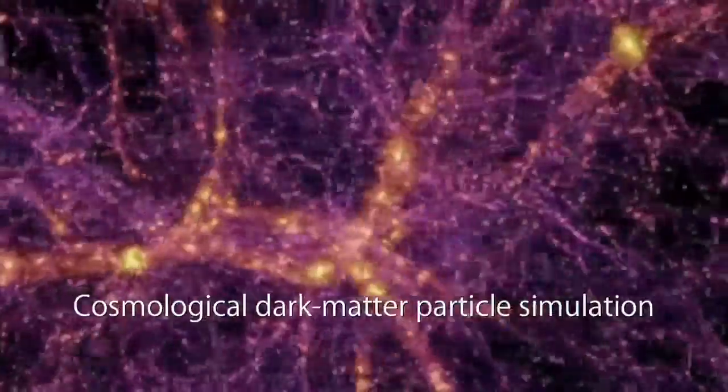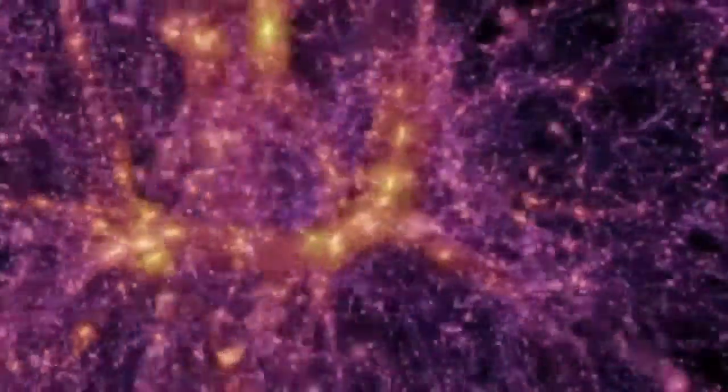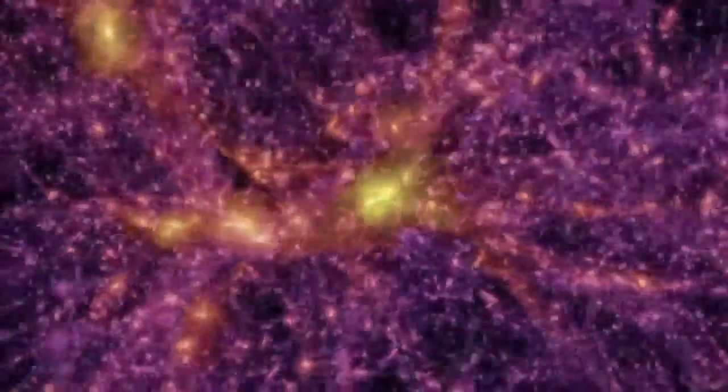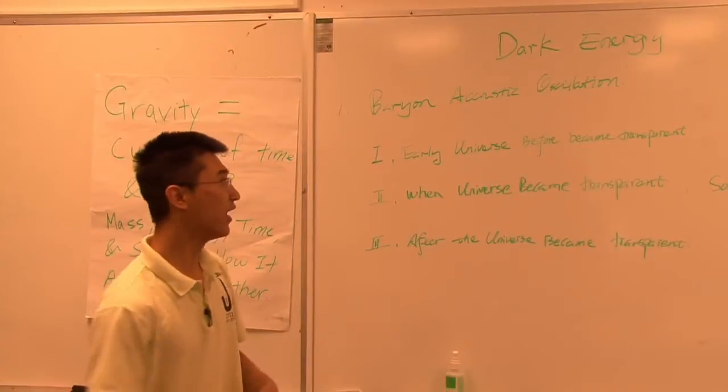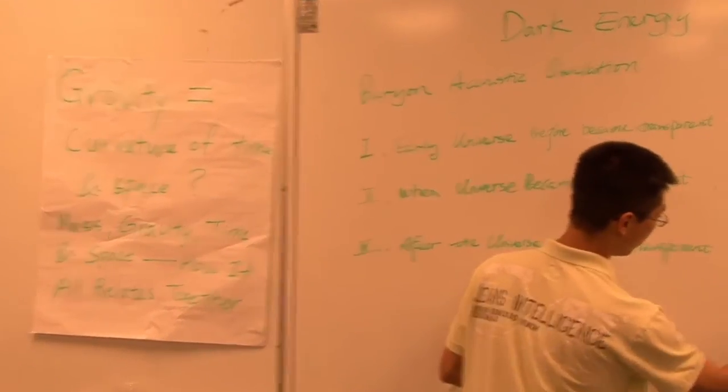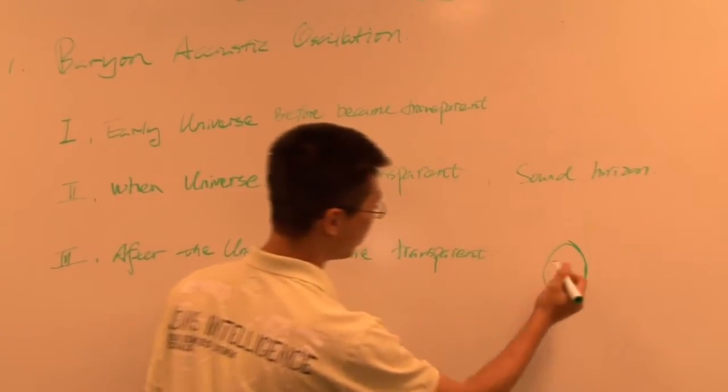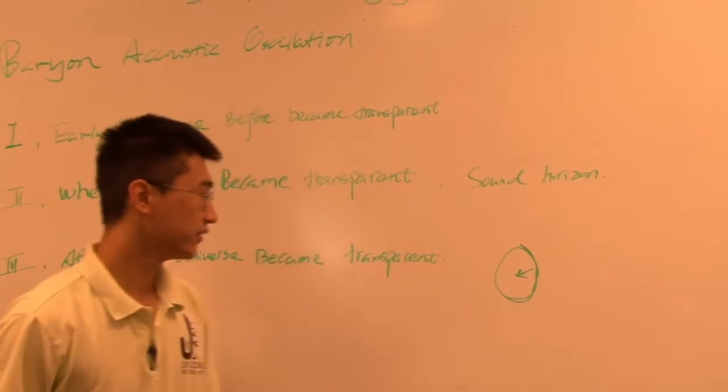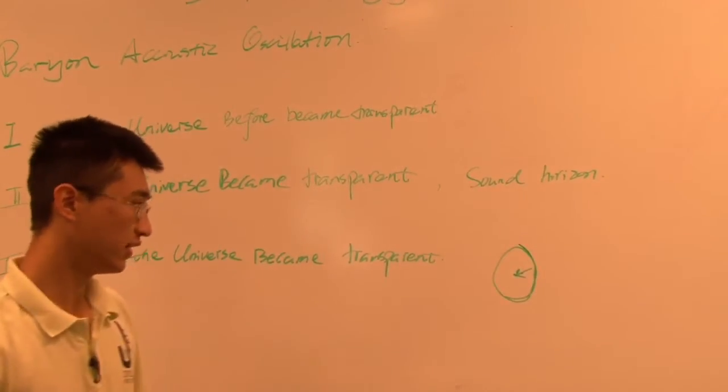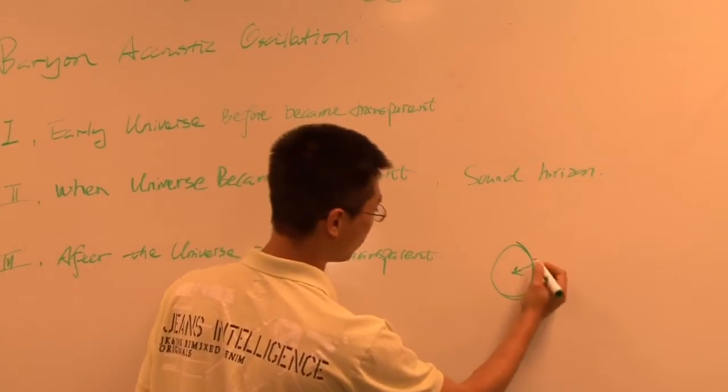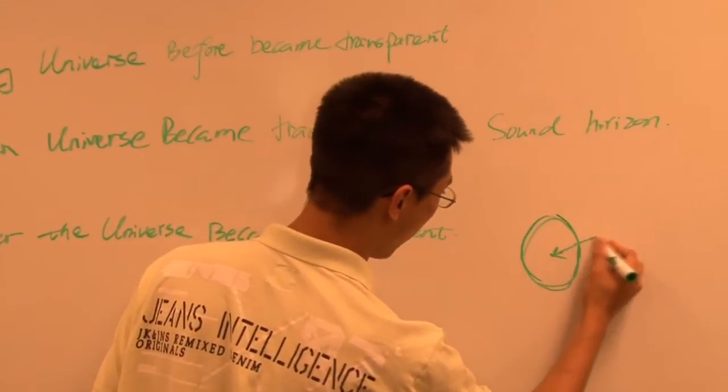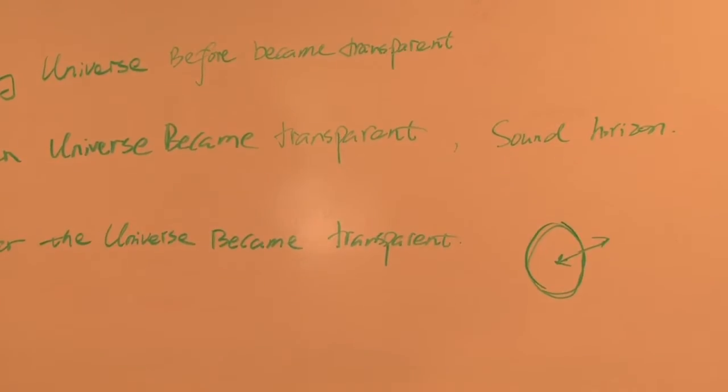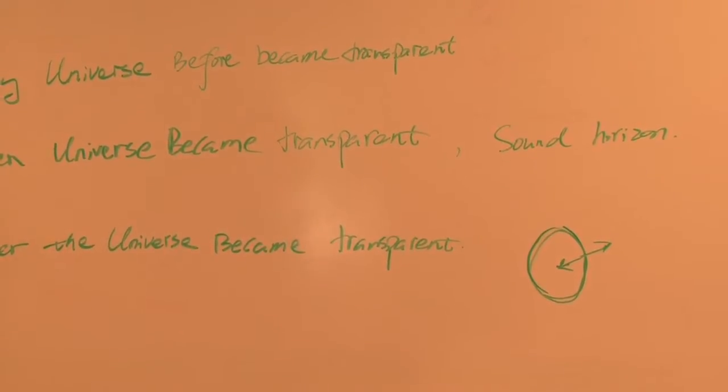So during this time, we have two forces. The first force is the gravitational force, which is exerted by the dark matter in the center. It tries to pull these baryons toward the center. Another force is the interaction between the photons and electrons. It's the pressure force that tries to make these baryons move outward. So these two counteracting forces create oscillating regions of compression and rarefaction.